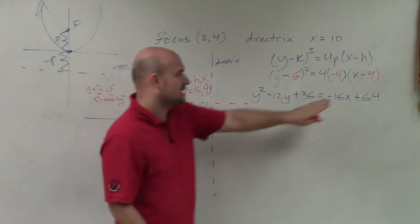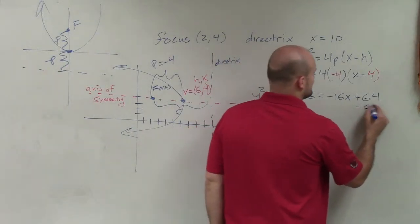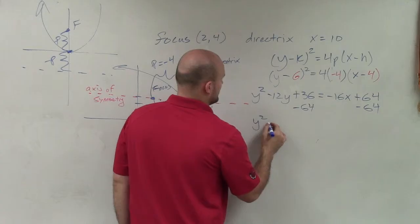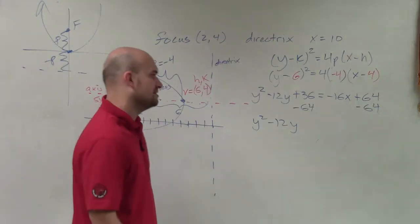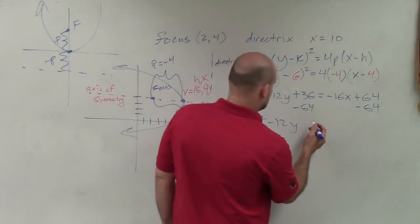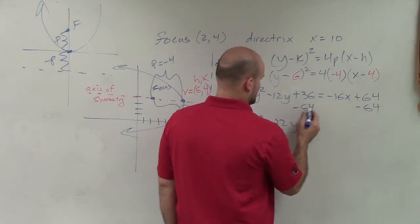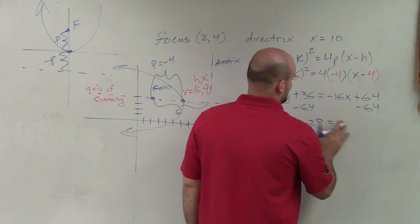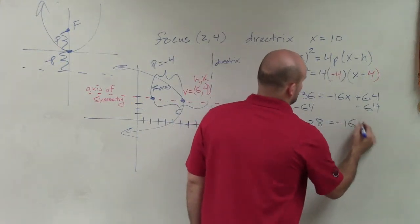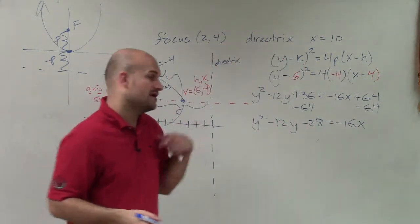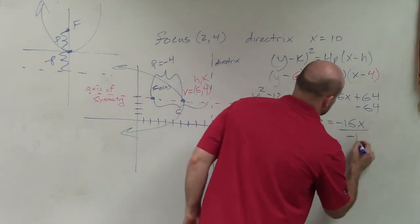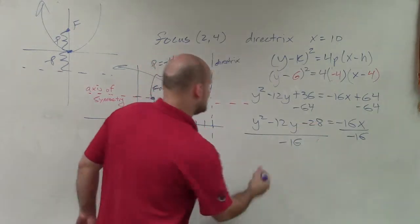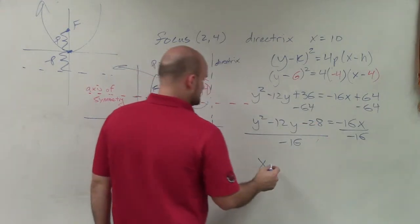So now I need to isolate my x. So I'm going to subtract 64 on both sides. So I have y² - 12y, 36, that's going to be 28. So it's going to be -28 = -16x. Now to solve for x, I'm going to divide by -16.